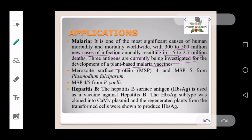These antigens are merozoite surface proteins MSP4 and MSP5 from Plasmodium falciparum, and MSP4/5 from Plasmodium vivax. Edible vaccines are also used in the treatment of Hepatitis B: the hepatitis B surface antigen (HBsAg) is used as a vaccine, where the HBsAg subtype was cloned into a CaMV plasmid, and the regenerated plants from transformed cells were grown to produce hepatitis B surface antigens.